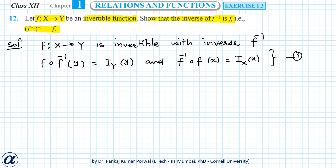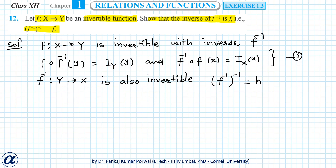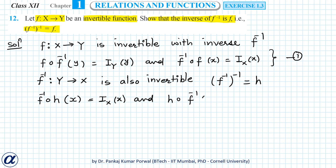We also know that the inverse of a function is also invertible, so f inverse from Y to X is also invertible, and its inverse will be f inverse inverse. Let's denote that by h. Again, the composition of the function and its inverse should equal the identity function, so f⁻¹ ∘ h on X equals the identity function of X, and h ∘ f⁻¹ on Y equals the identity function of Y.